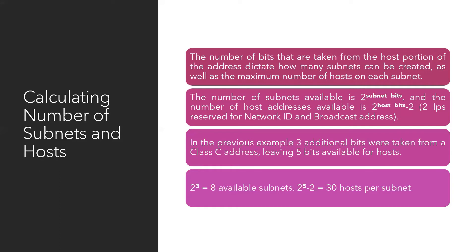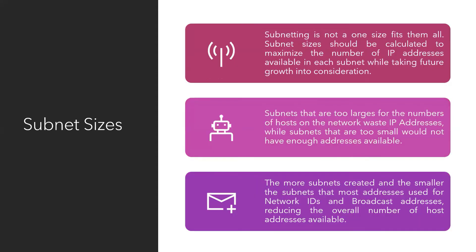The number of available subnets is 2 to the power of the subnet bits, and the number of available hosts is 2 to the power of the host bits minus 2 — since 2 IPs are reserved for network ID and broadcast address. In the previous example, using 3 additional bits: 2³ = 8 available subnets. With 5 bits remaining for the host portion: 2⁵ = 32 minus 2 = 30 hosts per subnet. So across those eight subnets, each can have 30 hosts. Subnetting should be calculated to maximize available IP addresses while accounting for future growth.